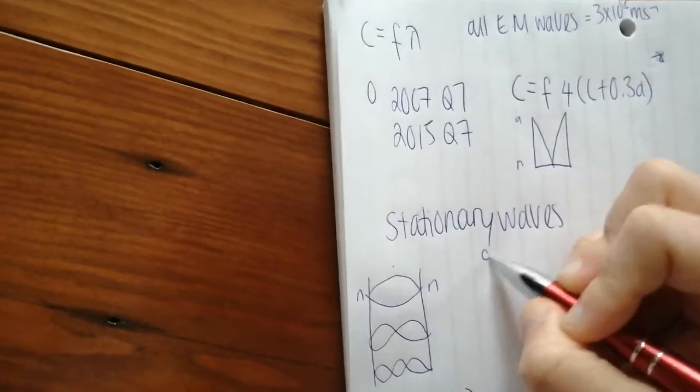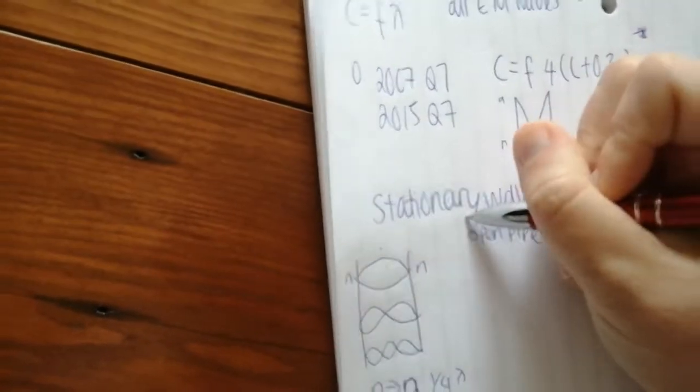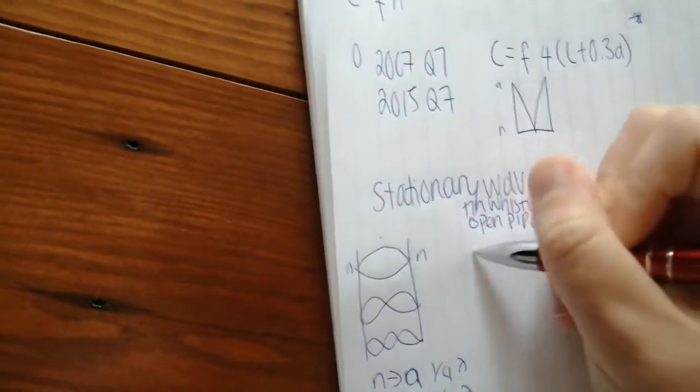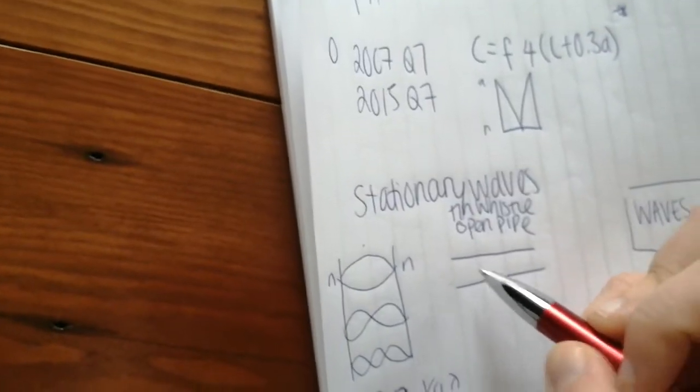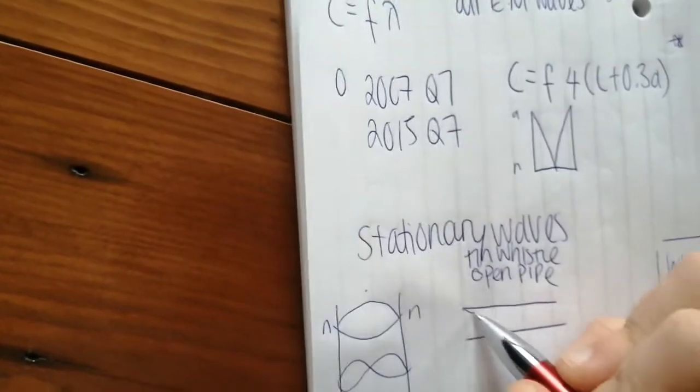In this case here, the length of the string node to node to node, so that's two of these, will be equal to a wavelength and so on. If I have an open pipe, for example, a tin whistle, it's open at both ends. What you'll find is if it's open at both ends, there'll be an anti-node at each end.